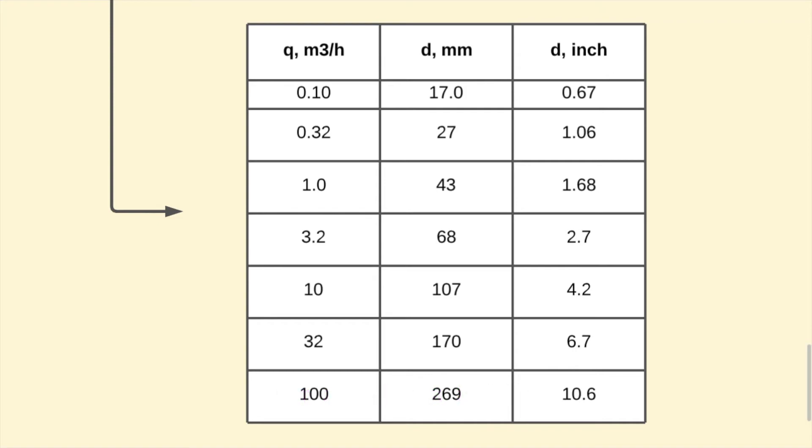The line sizes are a bit larger than we would expect for pipe flow. This is because the line flows partially full, and the extra diameter is needed to prevent vapor locking.